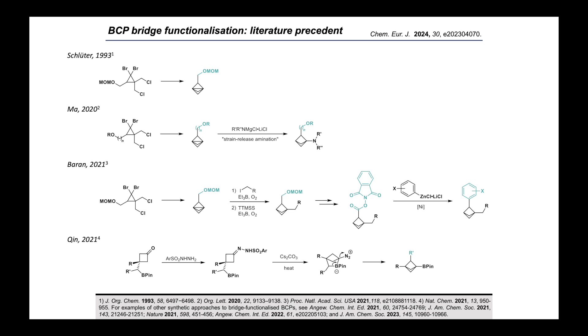Also in 2021, the Qin group at UT Southwestern made further progress in this field by showing a novel construction of the BCP core through an intramolecular Baeyer-Villiger type coupling. However, the bridge substituent in this case originates from the pre-functionalized cyclobutanone starting material, rather than from a direct BCP functionalization.